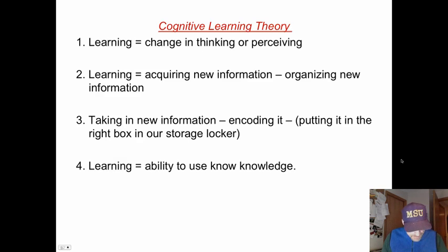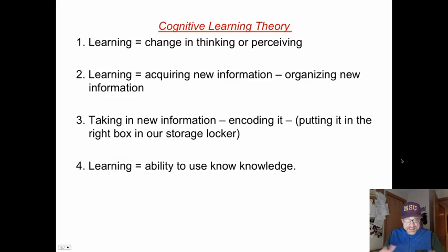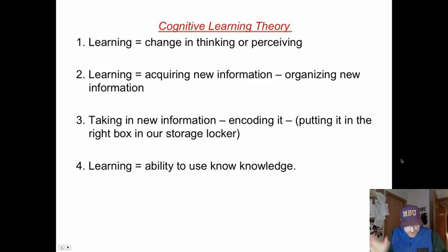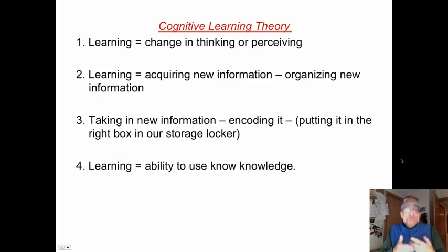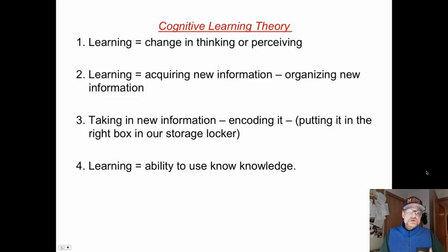Learning from this perspective — cognitive learning theory — is primarily a change in thinking caused by new information or experience. Learning is acquiring new information or organizing information already in our heads. It's adding strands to our cognitive web. We take in information, we encode it — meaning putting it in the right box (metaphor) and putting that box in the right place in our storage locker (metaphor for short-term memory) — so that we are able to retrieve it and use it. So learning is the ability to use knowledge; it must be meaningful if we're able to use it.